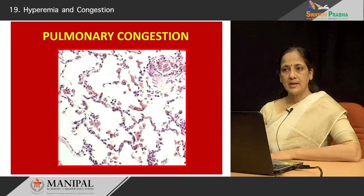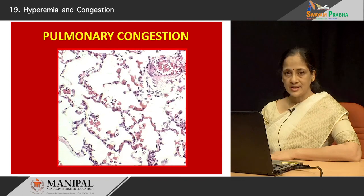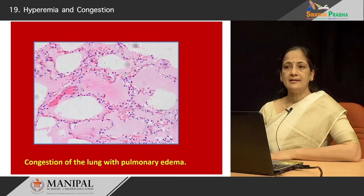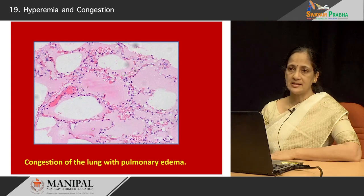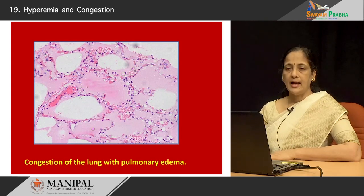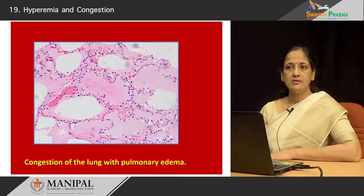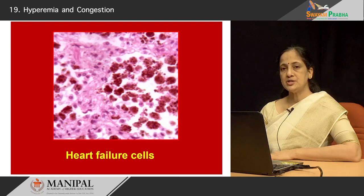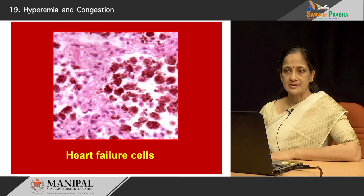Let us see what we see at the microscopic level. The first step when there is chronic venous congestion in the lung: the vessels in the septa become congested. Because of the buildup of pressure, hydrostatic pressure increases and fluid escapes into the septa and the alveolar spaces, so the patient will have pulmonary edema. As the pressure remains high in the venous radicals, micro-ruptures occur and hemorrhage is broken down and phagocytosed by the alveolar macrophages. You will see an accumulation of pigment-laden macrophages within the alveolar spaces — these are called heart failure cells.